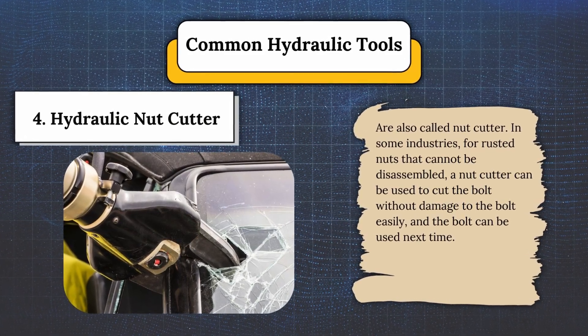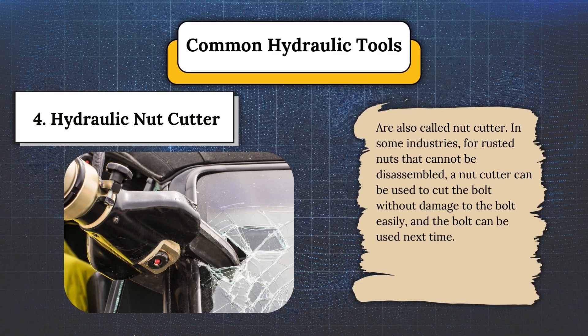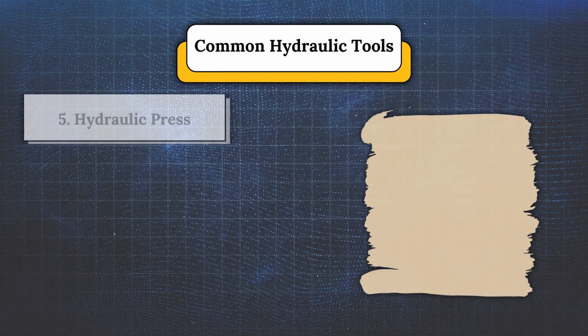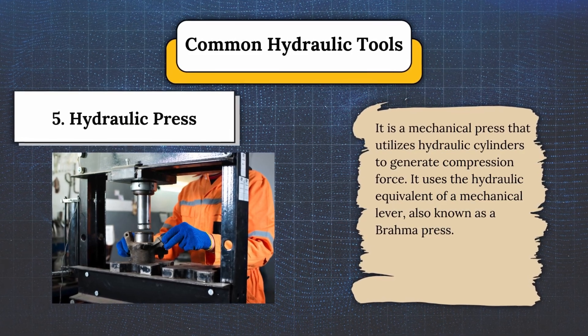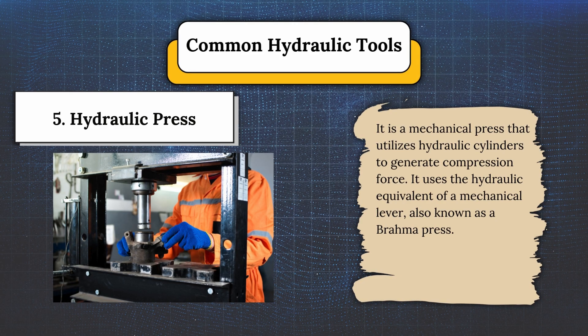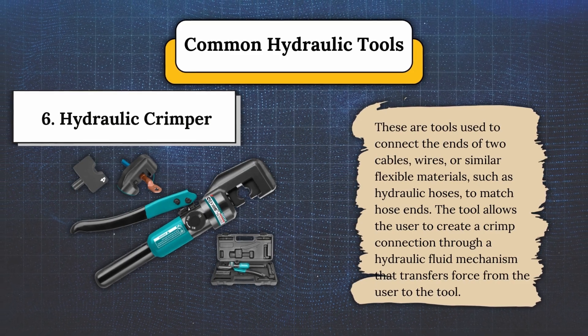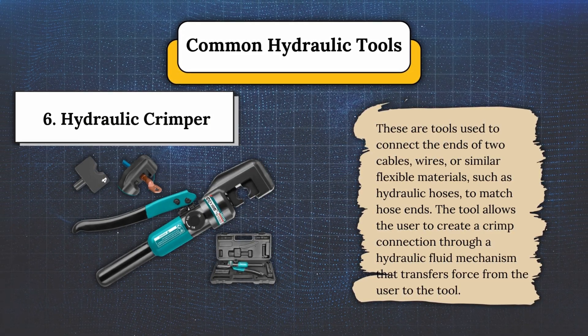Number four, hydraulic nut cutters — also called nut cutters. For rusted nuts that cannot be disassembled, a nut cutter can be used to cut the nut without damage to the bolt, so the bolt can be used next time. Number five, hydraulic press — a mechanical press that utilizes hydraulic cylinders to generate compression force, using the hydraulic equivalent of a mechanical lever, also known as a Brahma press. Number six, hydraulic crimpers — tools used to connect the ends of two cables, wires, or similar flexible materials such as hydraulic hoses, creating a crimp connection through a hydraulic fluid mechanism that transfers force from the user to the tool.